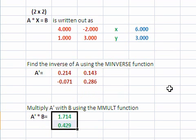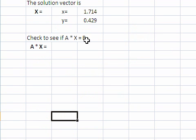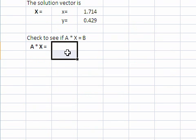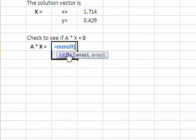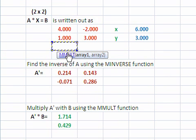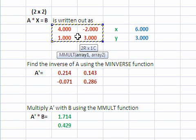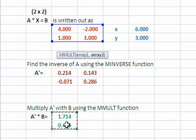Verify. Does A times X equal B? Multiply A times X. Select your range equals MMULT of A, comma, X, close paren.